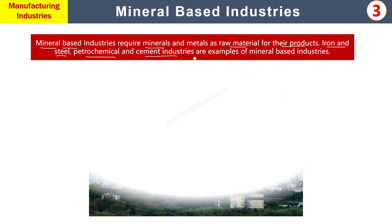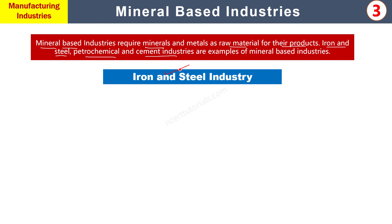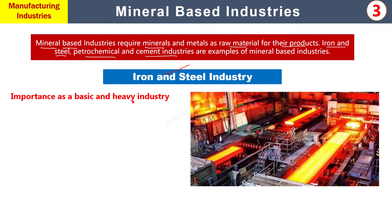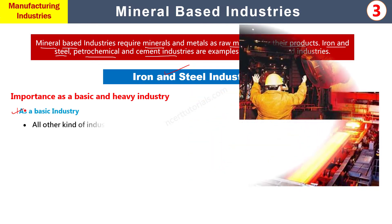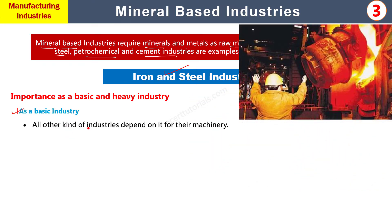سب سے پہلے ہم Iron and Steel industry کو لیں گے۔ یہ ایک basic and heavy industry ہے۔ Basic industry اس لیے ہے کیونکہ جتنی بھی other industries ہیں وہ اپنے machinery products کے لیے Iron and Steel industry پر depend کرتی ہیں، کیونکہ machinery لکڑی کی نہیں بلکہ metal کی بنی ہوتی ہے، mostly iron۔